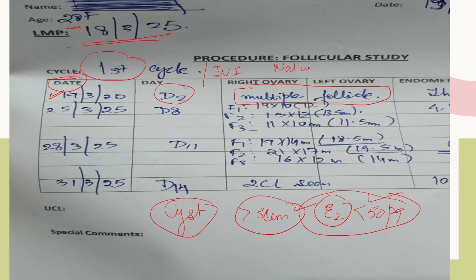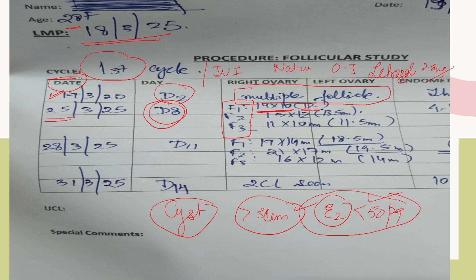After giving ovulation induction — in this case the patient is trying naturally — we usually give standard letrozole 2.5 mg once a day. On 25th March, which is the 8th day of her cycle, I called her in. You can already see 3 follicles: the average of the two biggest diameters is taken. The machines can calculate this for you. The sizes are 12, 13.5, and 11.5 mm.